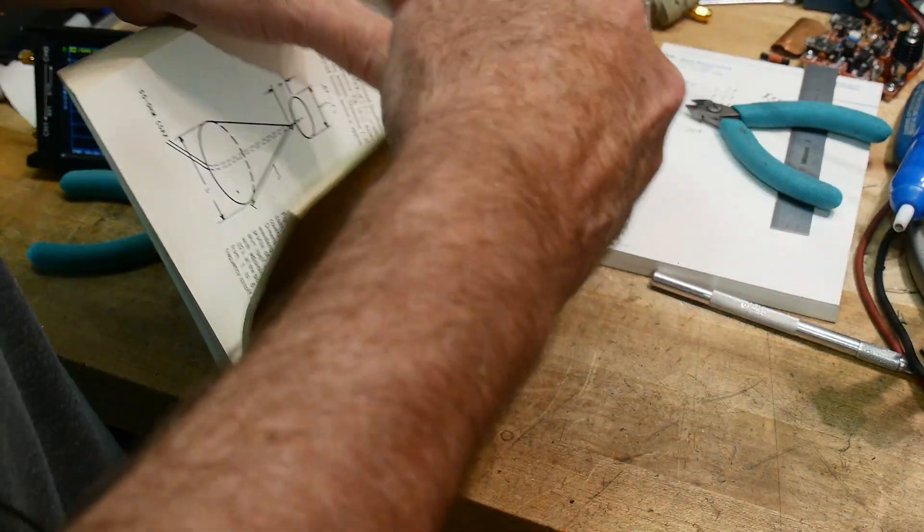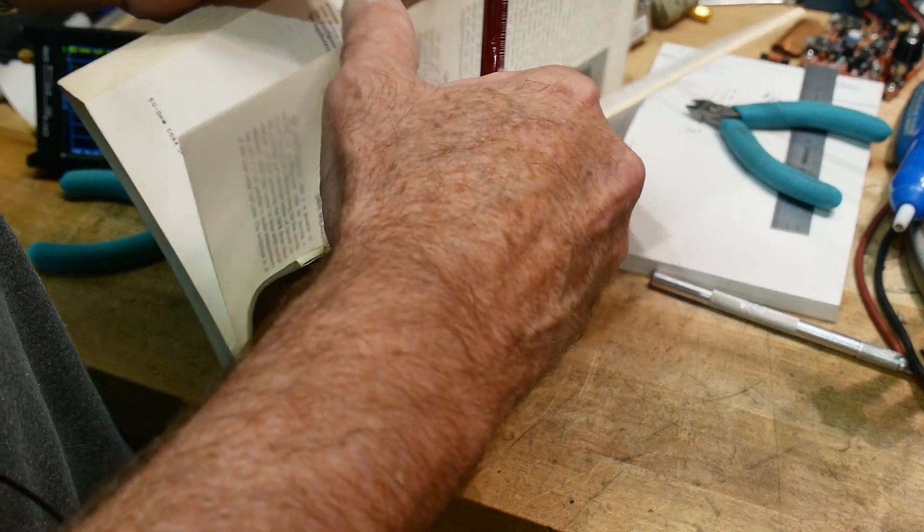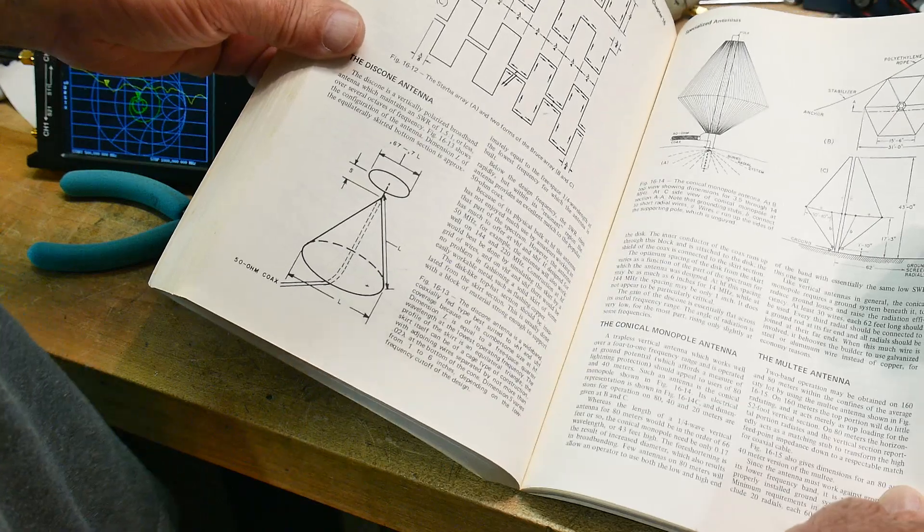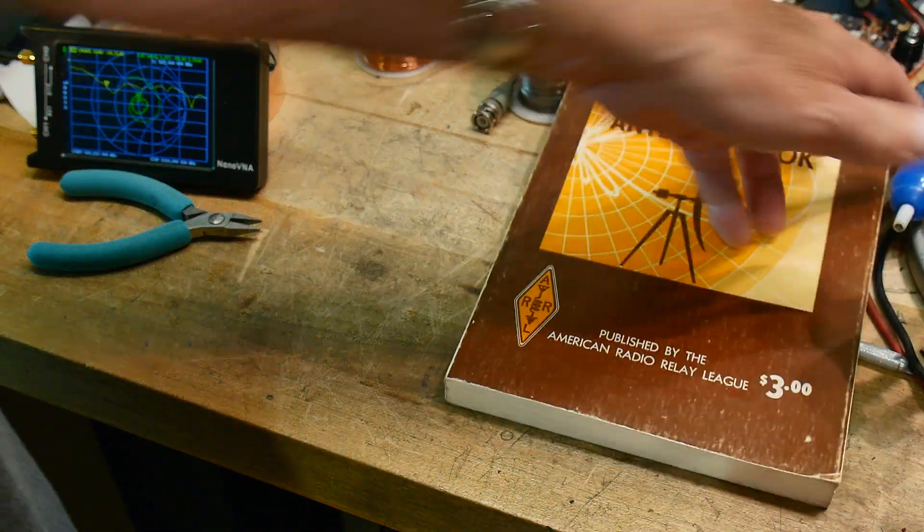And yeah, so anything else in this book about those? I think that might be the only two pages. So these things, Disc Cone Antenna, let's build one and measure it. Well, I did that.